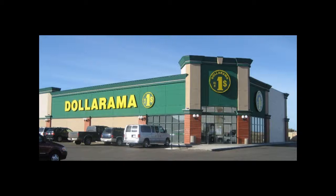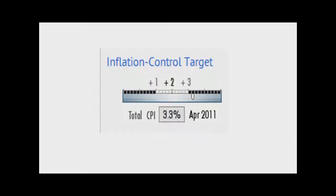You most likely bought that chocolate bar for about a dollar — unless, of course, you went to the Dollarama, two for one, what could be better? Well, next year the price of that chocolate bar will most likely be approximately a dollar and three cents. This is due to our inflation rate, which is hovering at about 3.3%, even though our inflation control target is about 2%, which we are trying to achieve.